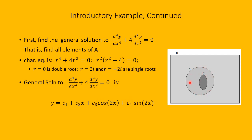All solutions inside A look like this. Now we have to find out which ones are in B. We can't just pick c1, c2, c3, and c4 arbitrarily and expect the solution to be in set B. Only particular values of c1, c2, c3, and c4 will fit the bill. So c1, c2, c3, c4 are what we call undetermined coefficients.